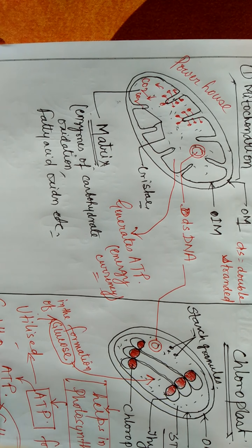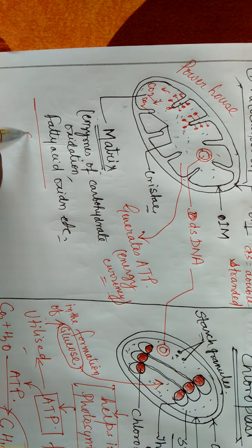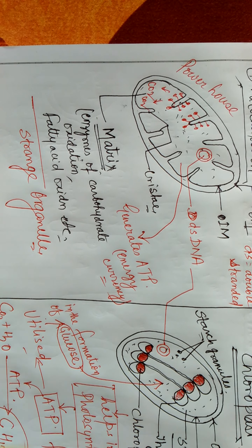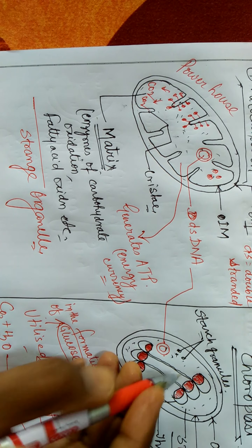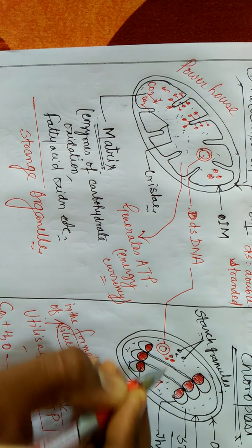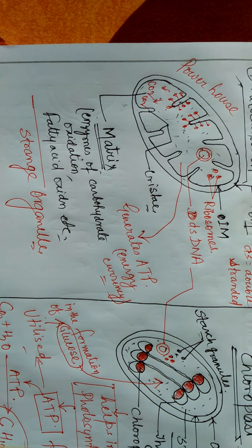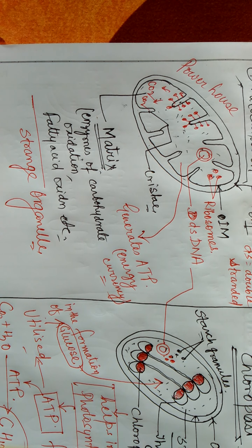Mitochondria is also called a 'strange organelle' because it has its own DNA. Wherever DNA is present, ribosomes are also there, so free ribosomes are present in mitochondria. These ribosomes help in protein synthesis — so with the help of ribosomes, mitochondria can synthesize its own proteins. But it is still dependent on the nucleus of the cell for some other proteins, so it is not a complete cell organelle. It is called a semi-autonomous organelle.